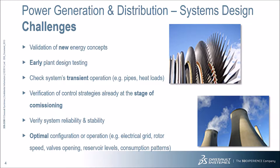What are the key challenges in the design of power generation and distribution systems? These include validation of new energy concepts, the need for early testing of plant designs, and the need to check the transient operation of the system. Verification of control strategies at the commissioning stage, as well as system reliability and stability, are also critical requirements. Finally, optimization of plant configuration or operation requires a multidisciplinary approach spanning engineering domains, controls, and even usage patterns.